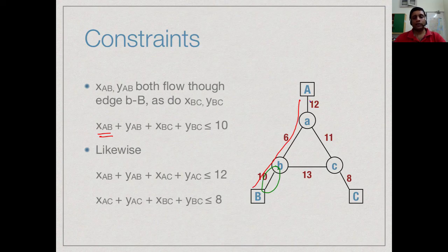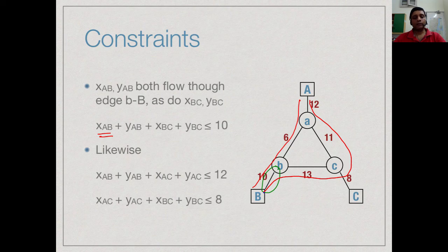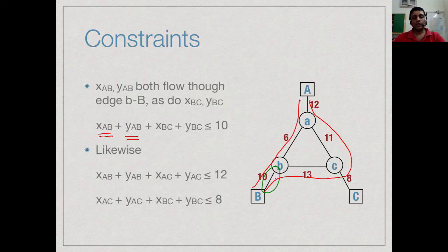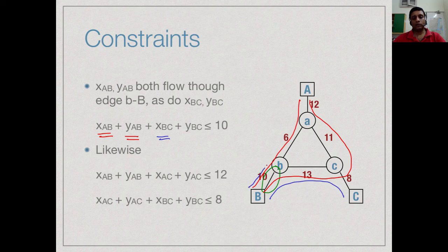Similarly, it lies on the y_AB route. That also has to ultimately reach capital B through small b. So, this will also eat into that. It also lies on the B to C route. So, x_BC and finally, it lies on the B to C route going the other way which is y_BC.